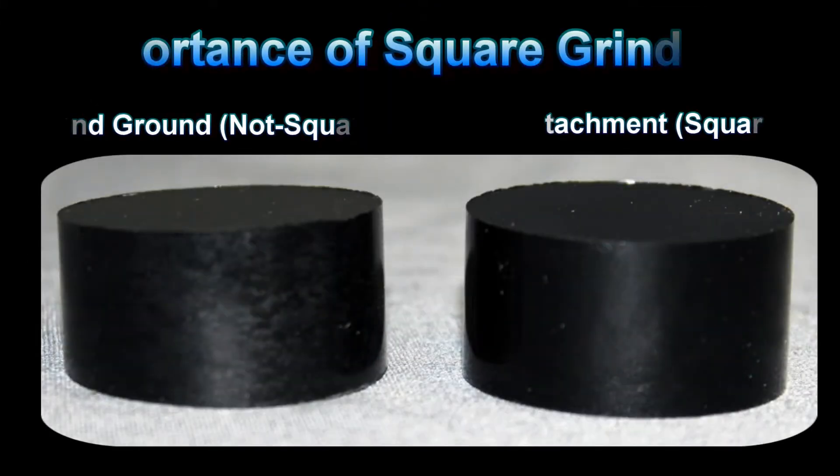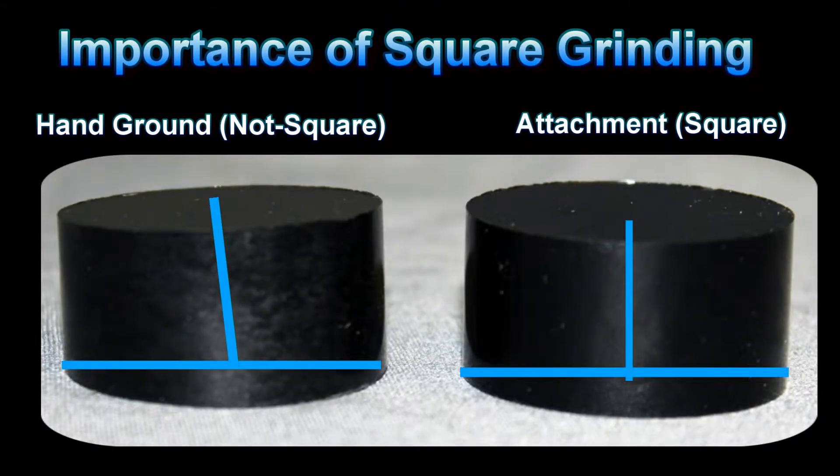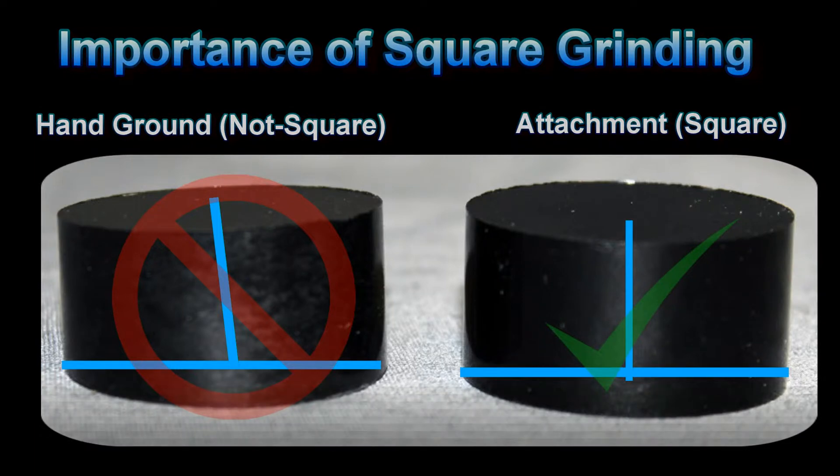Note, without the squaring fixture, it is nearly impossible to keep the mount square in both the X and Y direction. This has been the limitation of belt grinders in the past.